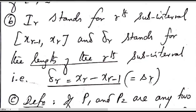For example, consider the fifth subinterval, which is the closed interval [x_4, x_5]. Then δ_5 = x_5 − x_4. This is how we find δ_r, namely the length of the r-th subinterval.